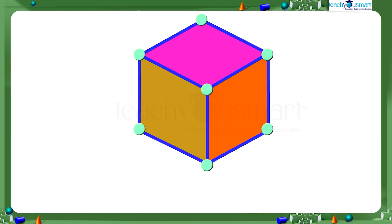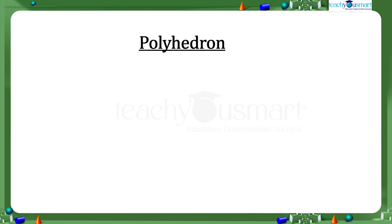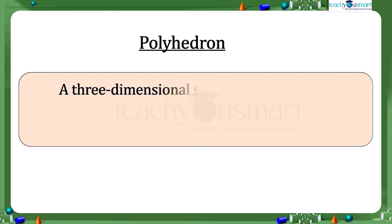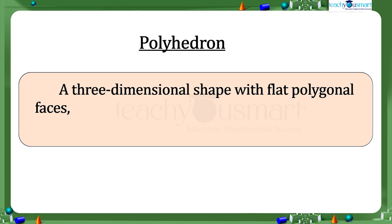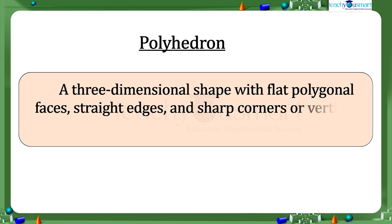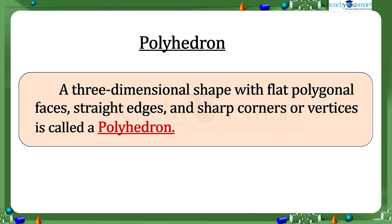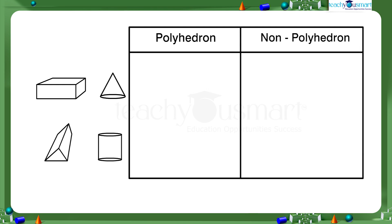Such shapes are called polyhedrons — that is, a three-dimensional shape with flat polygonal faces, straight edges, and sharp corners or vertices is called a polyhedron. Each polyhedron has a unique set of vertices, edges, and faces. Now, can you classify these shapes as polyhedrons and non-polyhedrons?